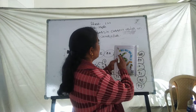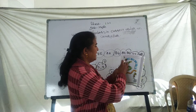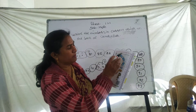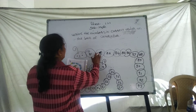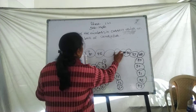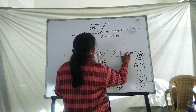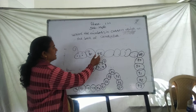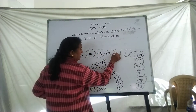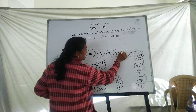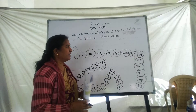Look at the pictures. Write the numbers in correct order. The number is 82. 81, 82, 83, 84, 85, 86, 87. The number is 87.